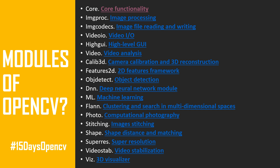The fifth module is 'highgui' for high-level GUI — I'll cover the trackbar in Day 7, which uses this module. It handles how you visualize video and provides a graphical user interface within OpenCV. The sixth is 'video,' for analyzing video. The seventh is 'calib3d,' for camera calibration and 3D reconstruction — useful when recognizing objects from 2D images.